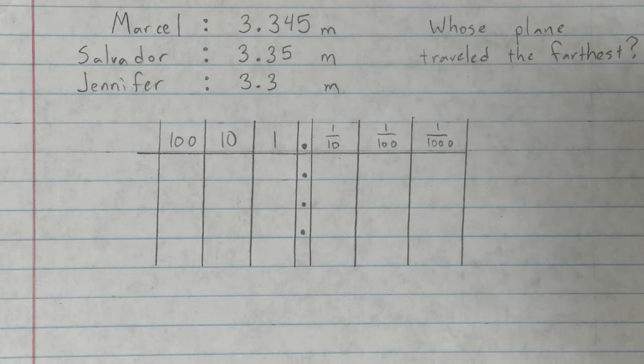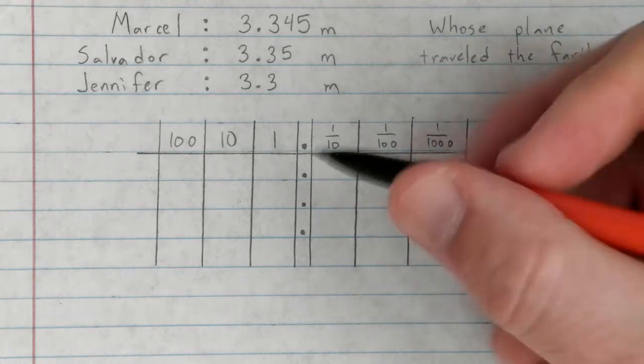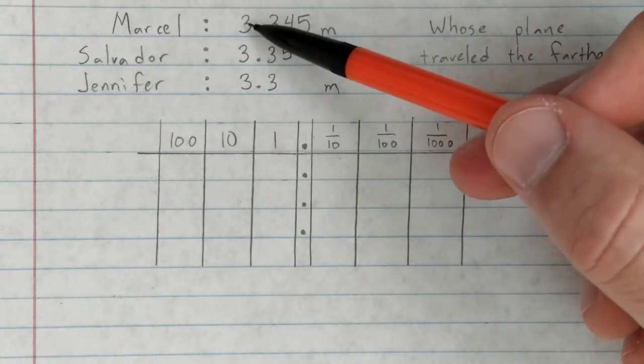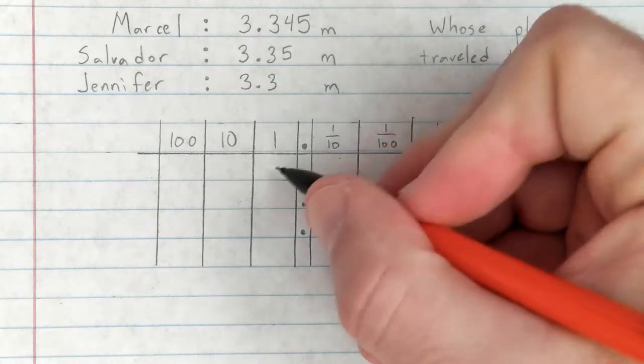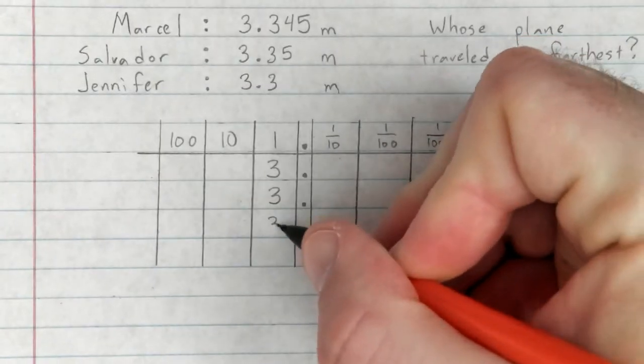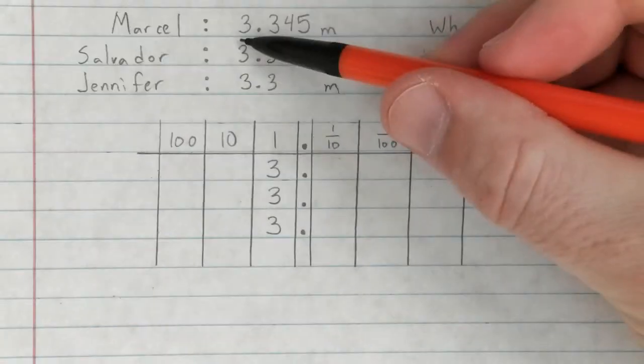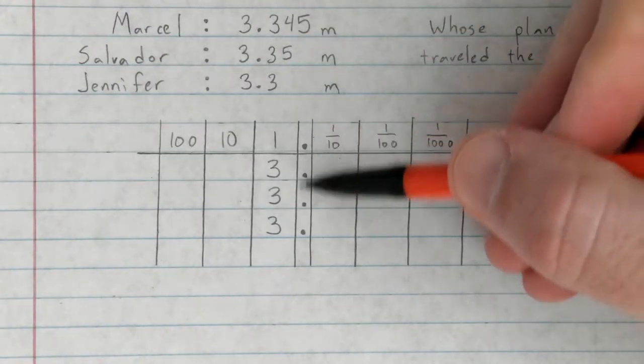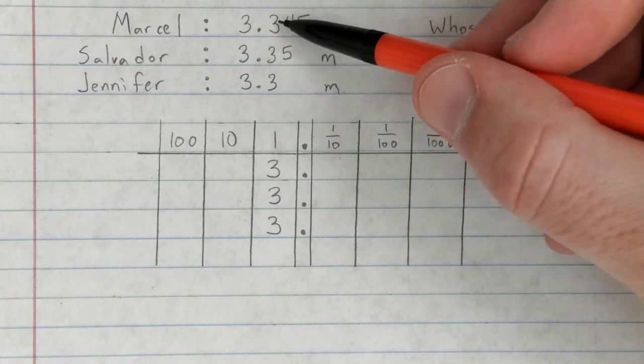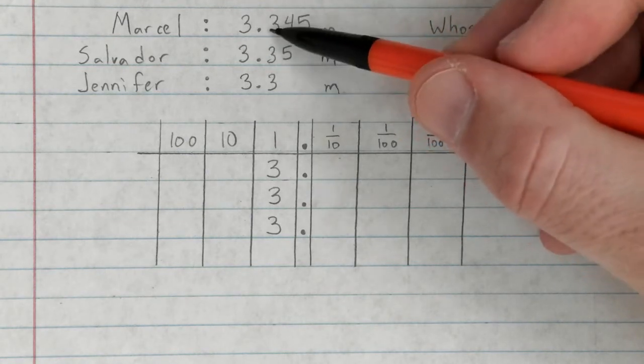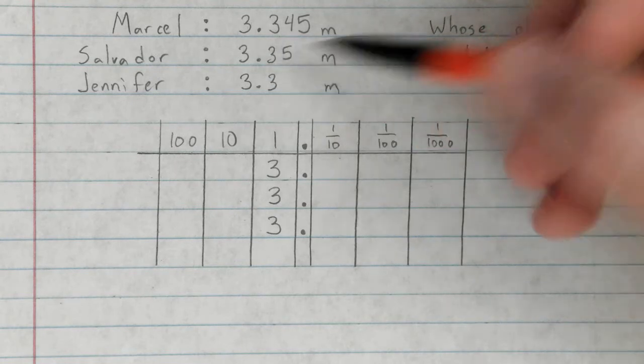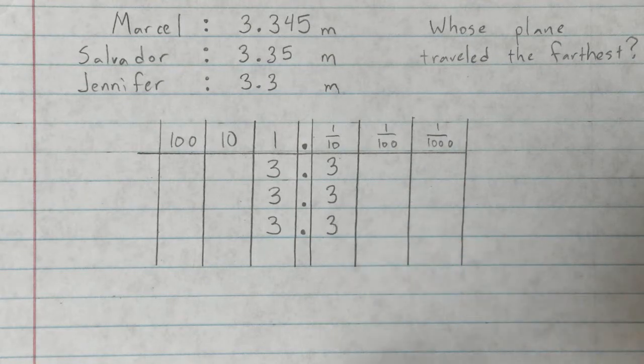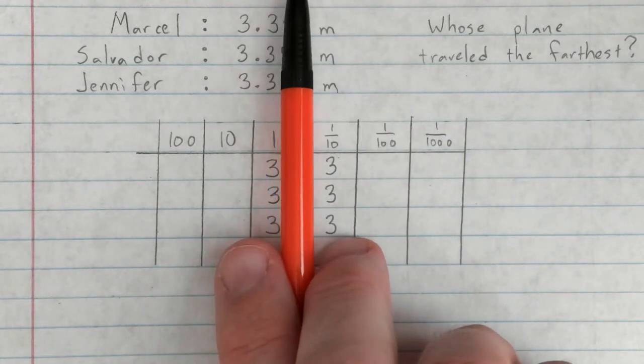All right, welcome back. Hopefully you paused and worked this out. If we take these numbers, we can take a look. They all have the same ones column, they all start with three. If I go into the next column, and this works because up here we lined up the decimal point just like it is here, if I look into the next column, the tenths column, three, three, three.